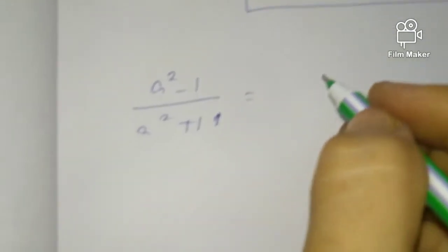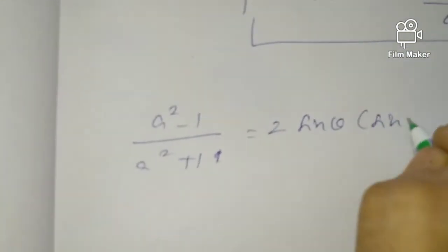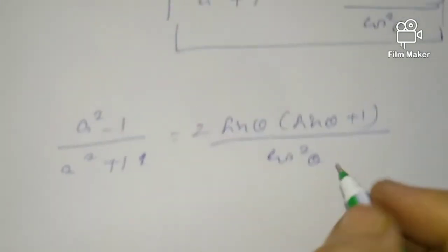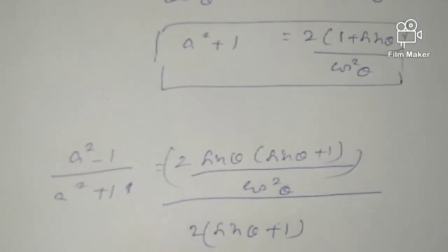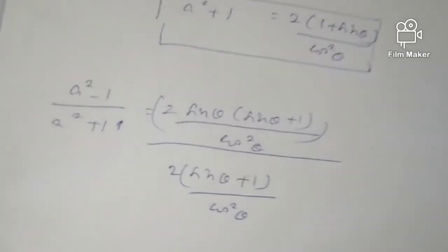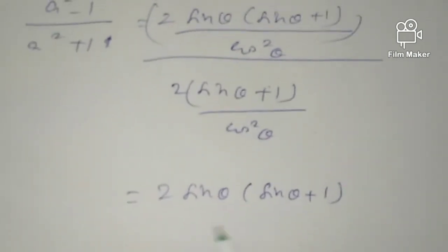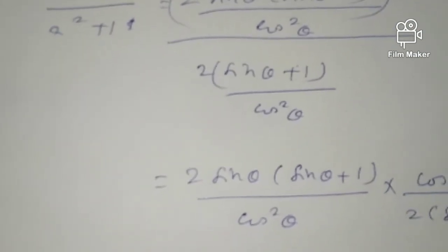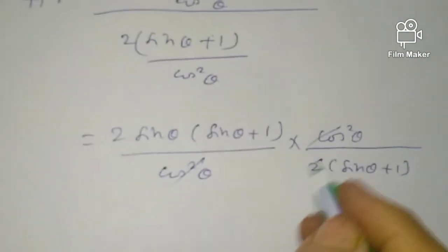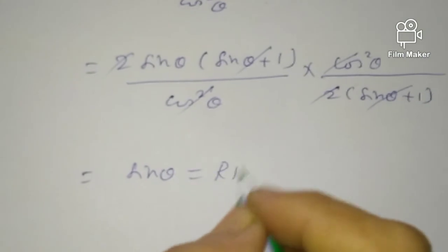So A squared minus 1 by A squared plus 1 equals 2 sin theta times sin theta plus 1 by cos squared theta, divided by 2 times sin theta plus 1 by cos squared theta. Cancelling the 2, sin theta plus 1, and cos squared theta, we get sin theta, which equals RHS. Proved.